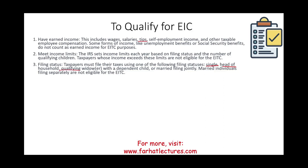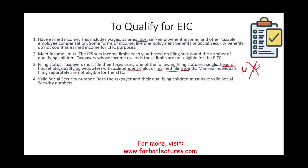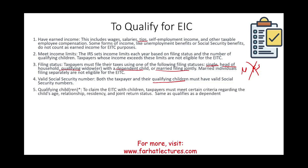For filing status, taxpayers must file as single, head of household, qualifying widow or widower with a dependent child, or married filing jointly. Married filing separately does not qualify for the EIC. You must also have a Social Security number — both the individual filing and any qualifying child or children being claimed on the EIC.